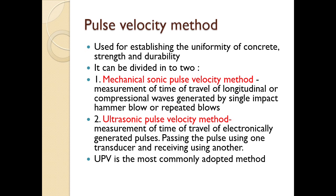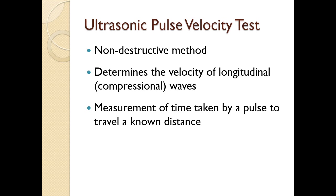The pulse velocity method is used for establishing the uniformity of concrete strength and durability. It can be divided into two types: the mechanical sonic pulse velocity method and the ultrasonic pulse velocity method. The ultrasonic pulse velocity test is a non-destructive method that determines the velocity of longitudinal waves.